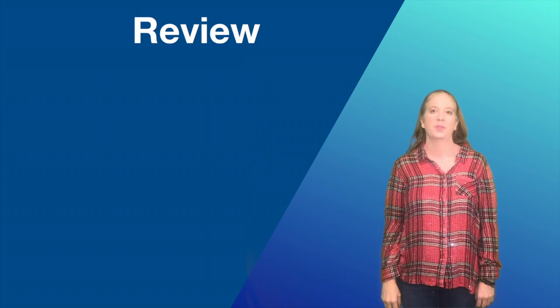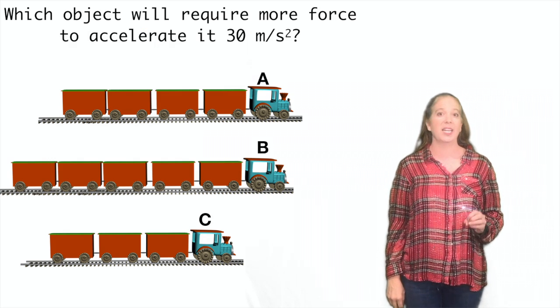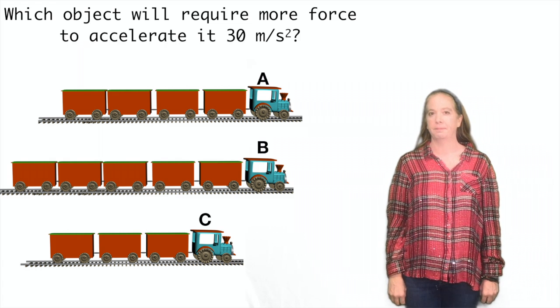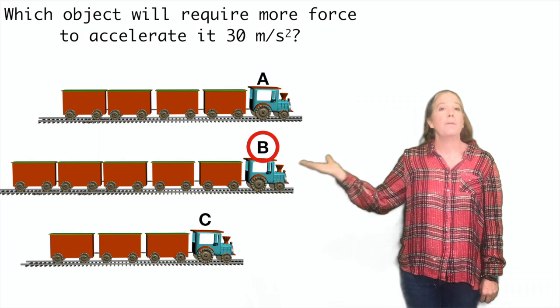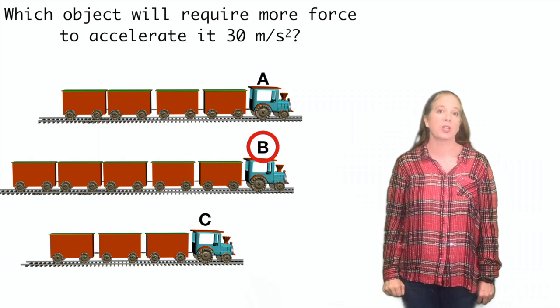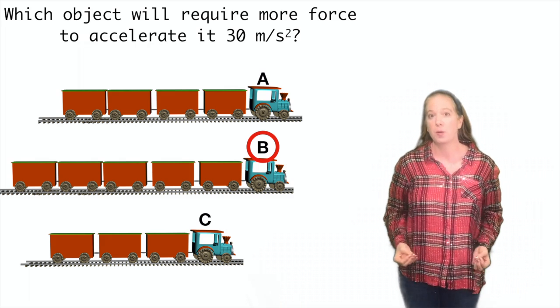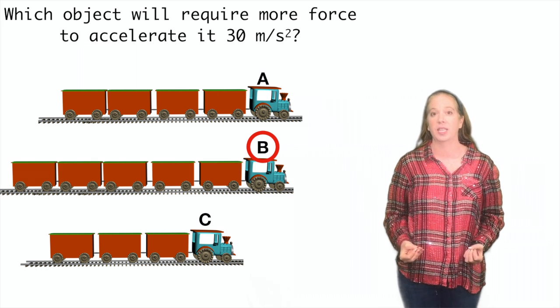Let's review. Which object would require more force to accelerate it at 30 meters per second squared? B has a lot more cars than A or C, so that means it has more mass. It's going to require more force to accelerate it at the same acceleration as the others.